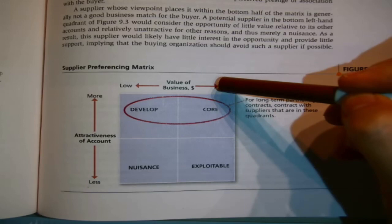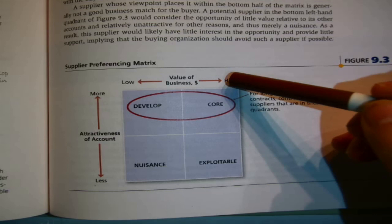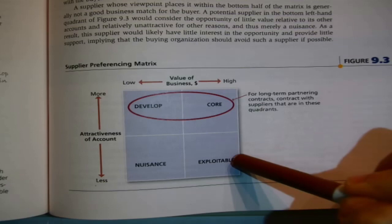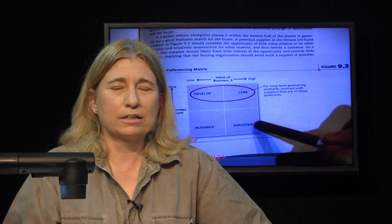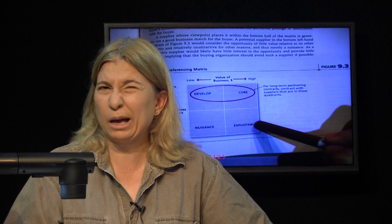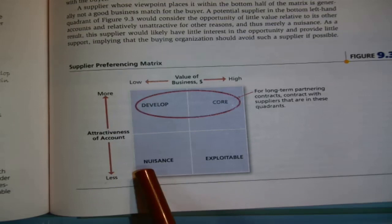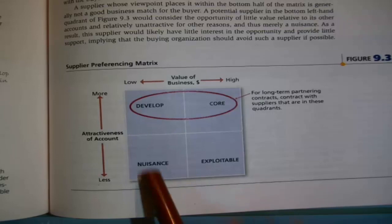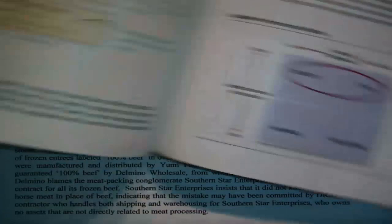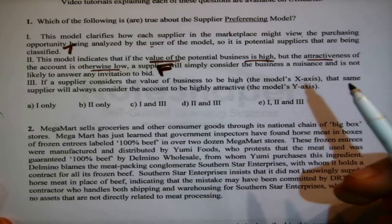So it's saying you're in a position where value of business is high, but attractiveness of the account is low. You might wonder how the attractiveness could be low if you're spending lots of money — maybe you're outside their service area, so while you're talking about spending a lot with them, it would be a big hassle because they don't normally work in that area. The statement says they'd consider you a nuisance and not likely to answer your invitation to bid — but wait, that's actually not right. If you're talking about spending a lot of money but are otherwise not an attractive account, they would consider you exploitable.